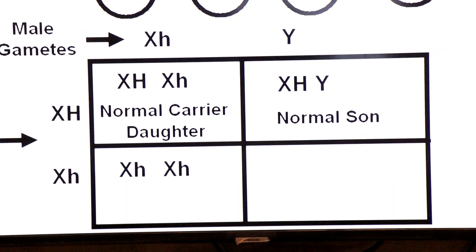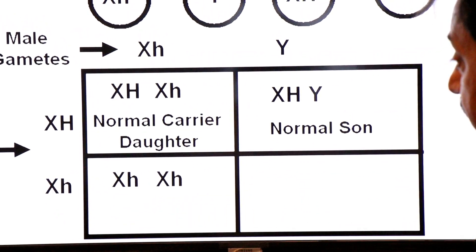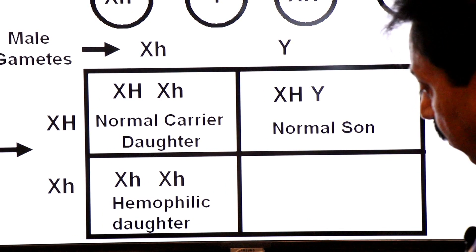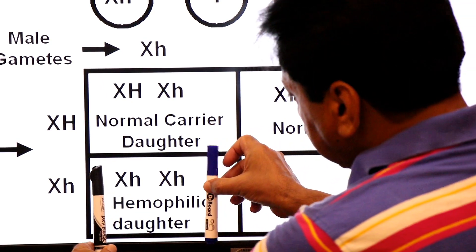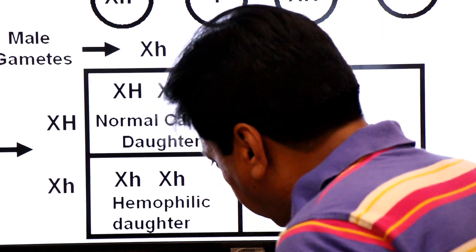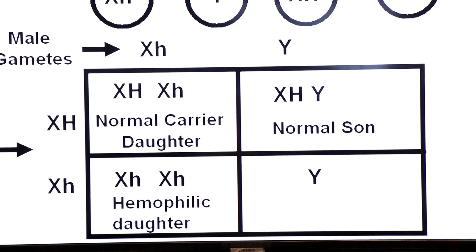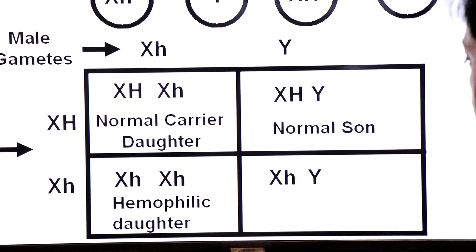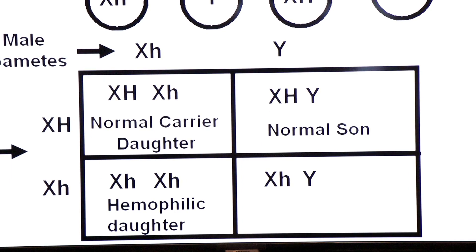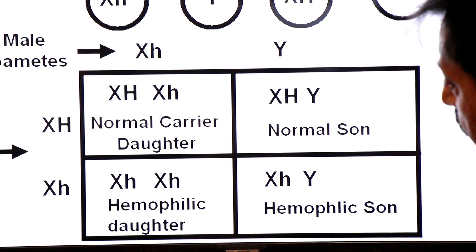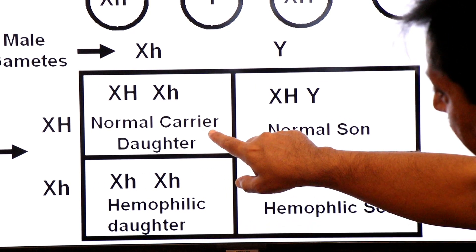Third box: from top X small h and from left X small h — giving X small h X small h — that will be a hemophilic daughter. Girls are hemophilic only when both inherited X-chromosomes carry the defective allele small h. Last box: from top Y and from left X small h — that will be a hemophilic son, because boys become hemophilic with just one small h, which is why hemophilia frequency is higher in boys.